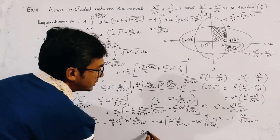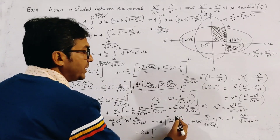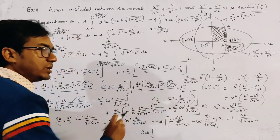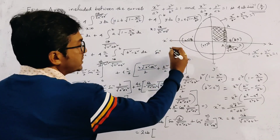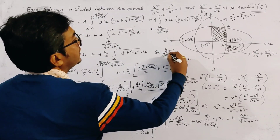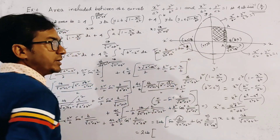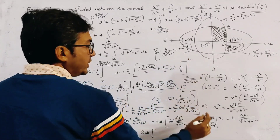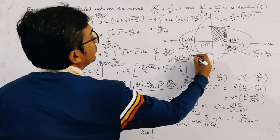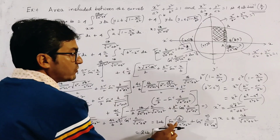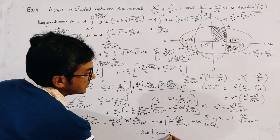So both terms give tan⁻¹(b/a), and their sum is 2·tan⁻¹(b/a). Therefore the expression becomes 2ab · 2·tan⁻¹(b/a) = 4ab·tan⁻¹(b/a).